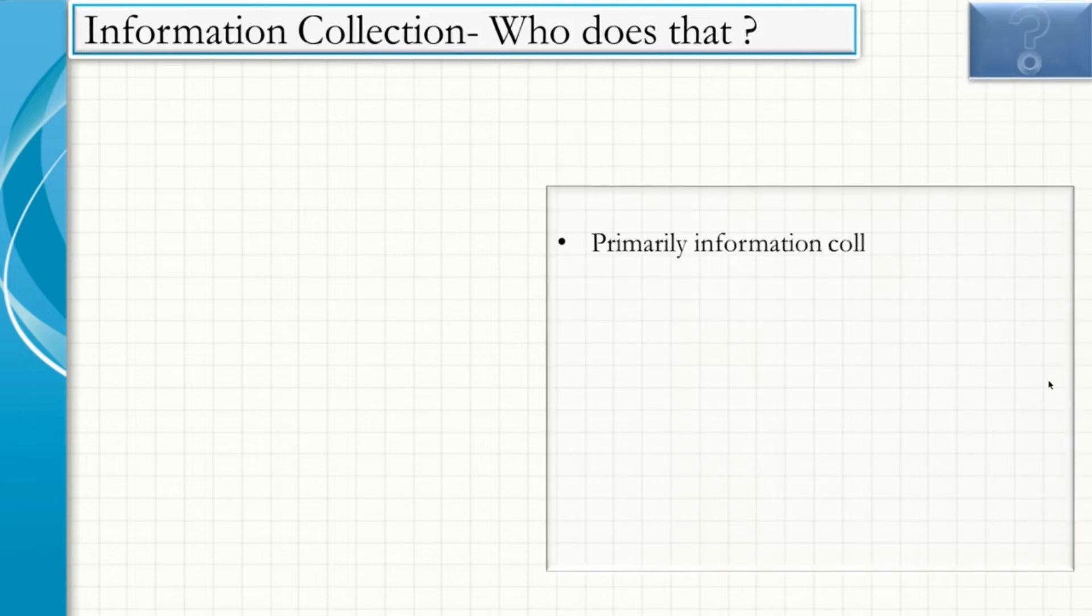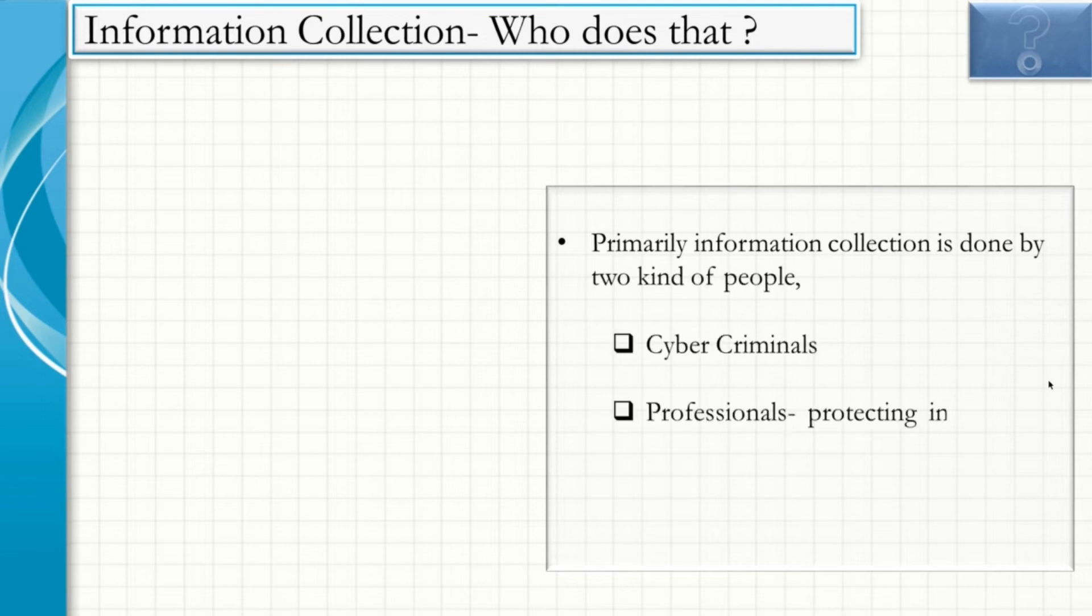Information collection. Important point is, who does that? Primarily, information collection is done by two kinds of people. One is Cyber Criminals and the other one being Professionals trying to protect Information Leakage.